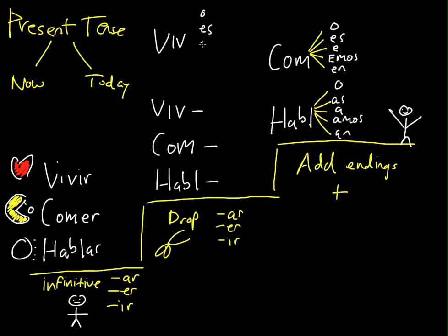And now we're going to add our endings. O, S, E, IMOS, and EN. So now we have VIVO, I live. VIVES, you live. VIVE, he, she, or you formal live. VIVIMOS, we live. And VIVEN, they, or you all, plural, live.